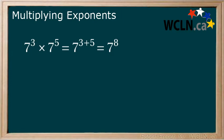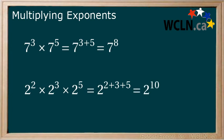Let's try something that looks a little different. 2 to the power of 2 multiplied by 2 to the power of 3 multiplied by 2 to the power of 5. This equals 2 to the power of 2 plus 3 plus 5, which equals 2 to the power of 10. You can see that this rule applies to any number of terms when the base is the same.